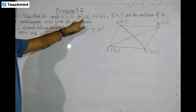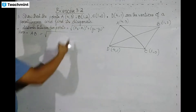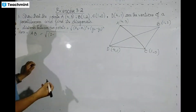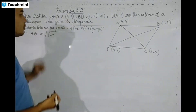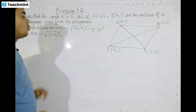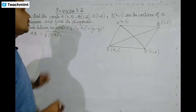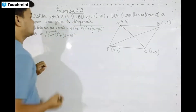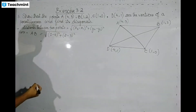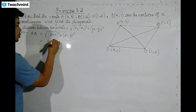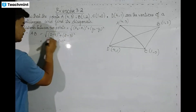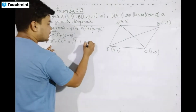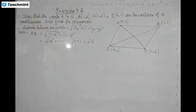For AB: x1, y1 are coordinates of A, and x2, y2 are coordinates of B. So x2 minus x1 equals 1 minus 4, whole square, plus y2 minus y1 equals 2 minus 3, whole square. That gives minus 3 whole square plus minus 1 whole square, which is 9 plus 1. So AB equals root over 10.